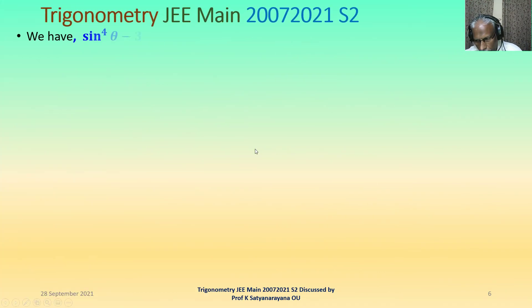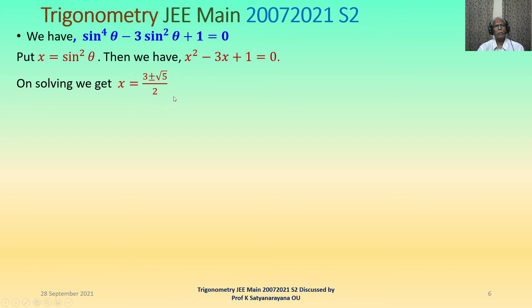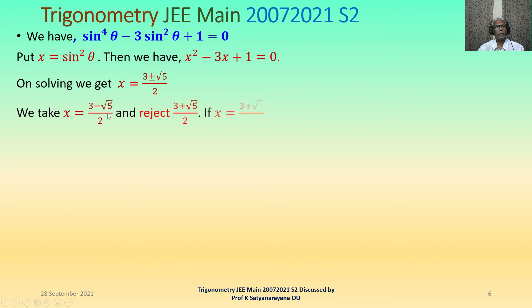From the equation sin⁴θ − 3sin²θ + 1 = 0, let x = sin²θ. The equation becomes x² − 3x + 1 = 0, which is a quadratic in x. Solving gives x = (3 ± √5) / 2. We take x = (3 − √5)/2 because it is less than 1, and we reject x = (3 + √5)/2 because it is greater than 1.